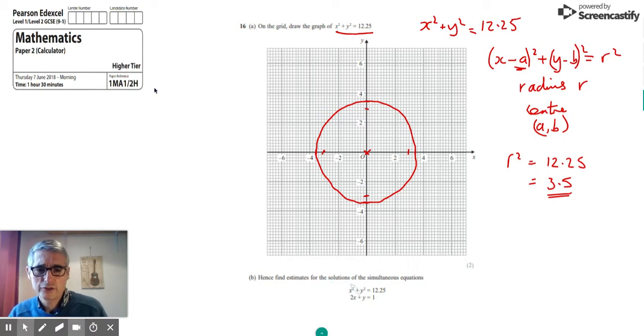And it says, hence, find estimates for the solution of these simultaneous equations, where x squared plus y squared is 12.25, which is the one we've already drawn, and also 2x plus y equals 1. So to use our graph to do this, we need to plot this second simultaneous equation. If we get it in the form y equals mx plus c, we'll get y equals minus 2x plus 1, which we then need to plot.